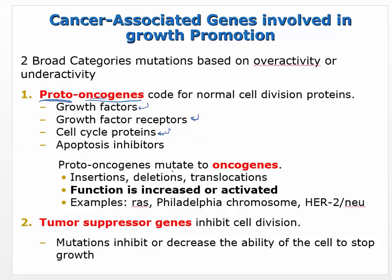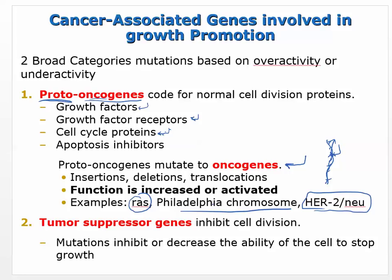Mutations include insertions, deletions, and translocations — these change the DNA and constitute a mutation. Examples of genes with known normal functions that when mutated cause cancer include Ras and the Philadelphia chromosome, which we'll learn about with leukemias. HER2/neu is a receptor that when constitutively active causes continuous epidermal cell growth in the breast. Chromosome changes can also produce more copies of a growth factor, making the cell much more sensitive.